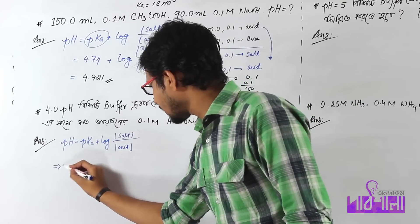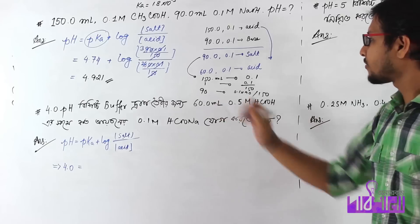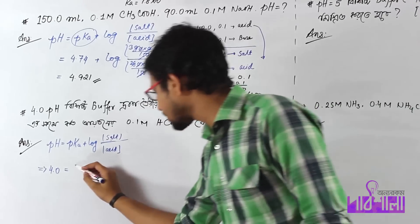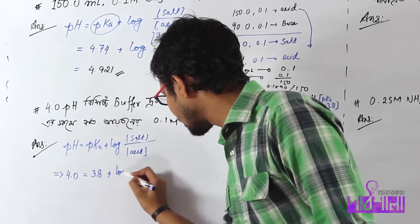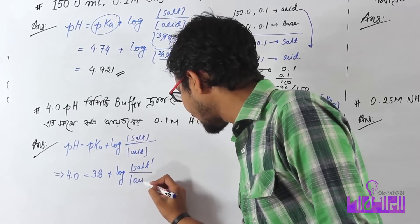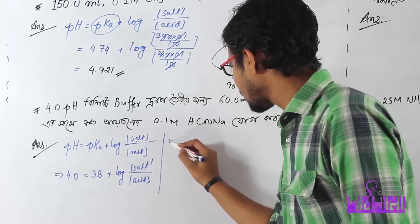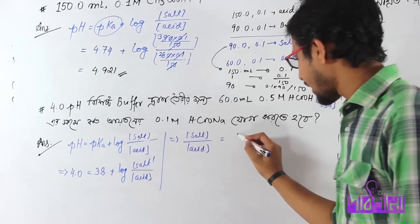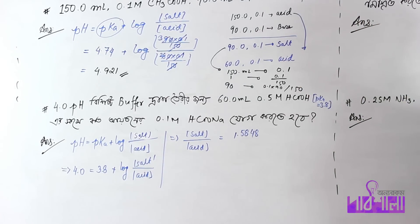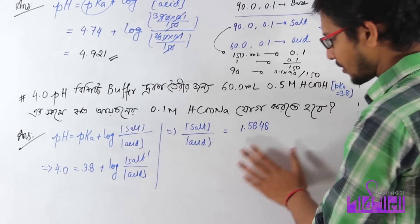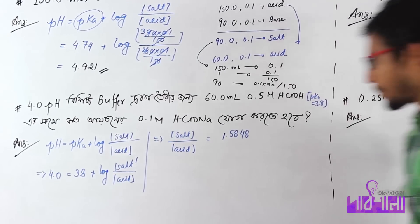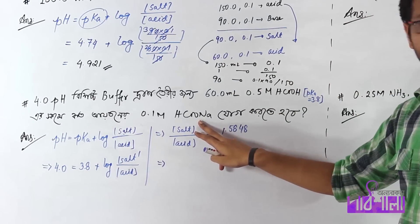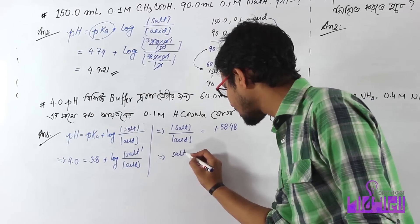Let me show you that pH value is 4.0 and the pKa value for formic acid is 3.8. So I am going to show you 3.8 plus log of salt concentration divided by acid concentration. Ultimately, I am going to show you that salt divided by acid equals 1.5848. So the ratio of salt to acid is 1.5848.